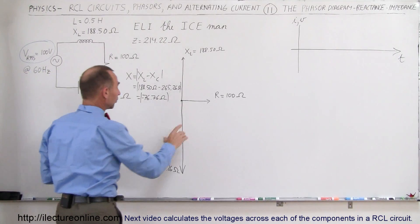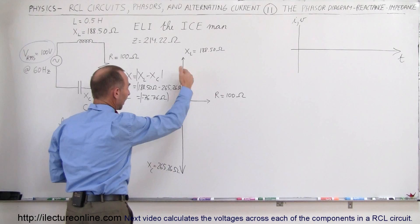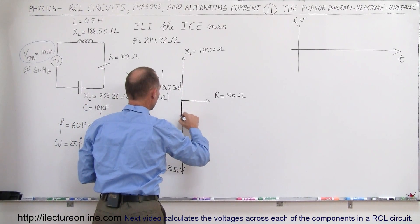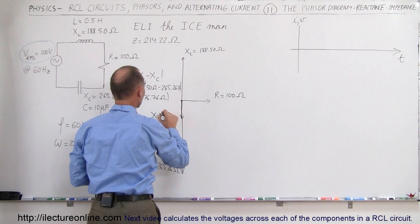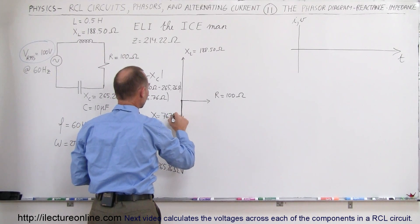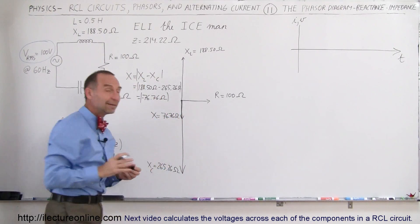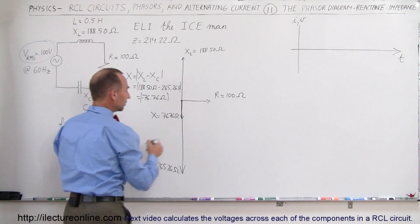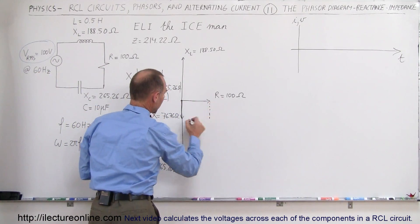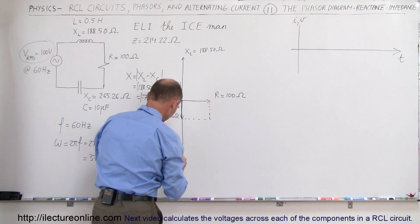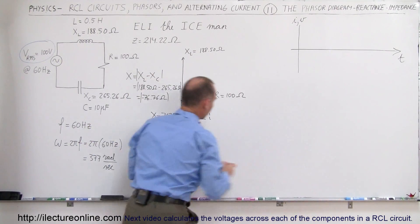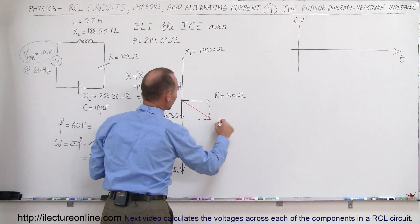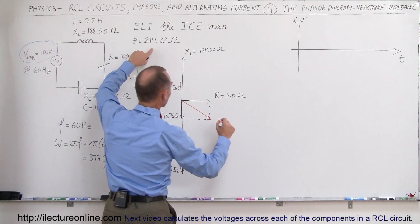Graphically, what does that look like? First of all, we're going to subtract this from that, so we get a total reactance this way. So here would be X equal to 76.76 ohms. And then if we want to find the impedance of that circuit, we then vectorially add these two together. So let's do that right here, and using a different color — this would be the impedance of the circuit, that would be Z.